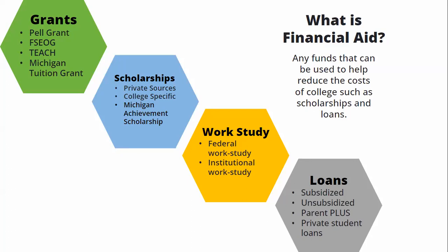Loans and work study are referred to as self-help aid because they require the student to either pay back the funds or participate in a job, like with federal work study. All of these resources come together to make a student's financial aid package offer. It's important to note that not all financial aid has the same requirements or processes. For example, you may be asked to complete an essay application for a scholarship, whereas for Pell Grants, you just have to complete the FAFSA application to see if you qualify.